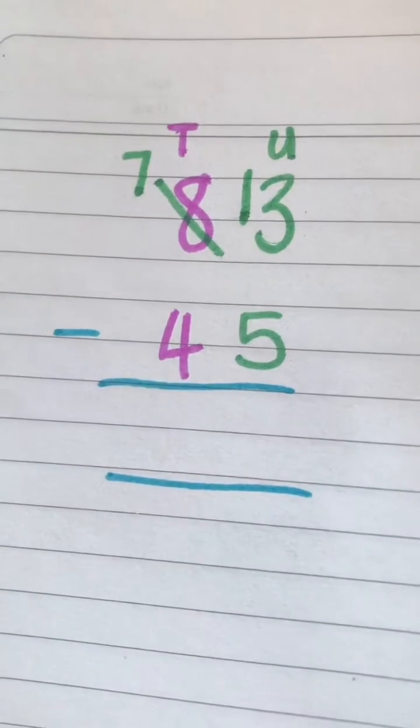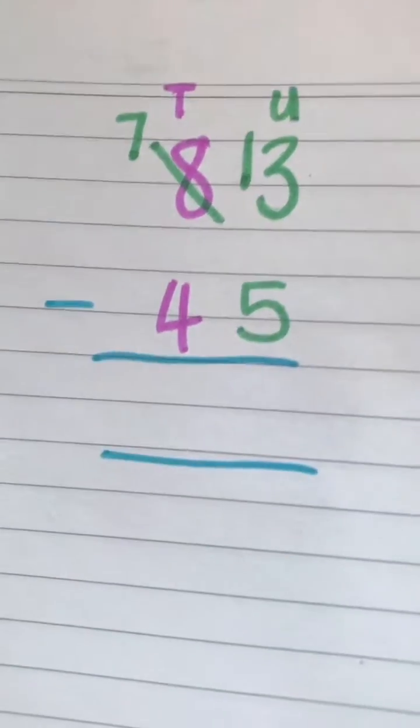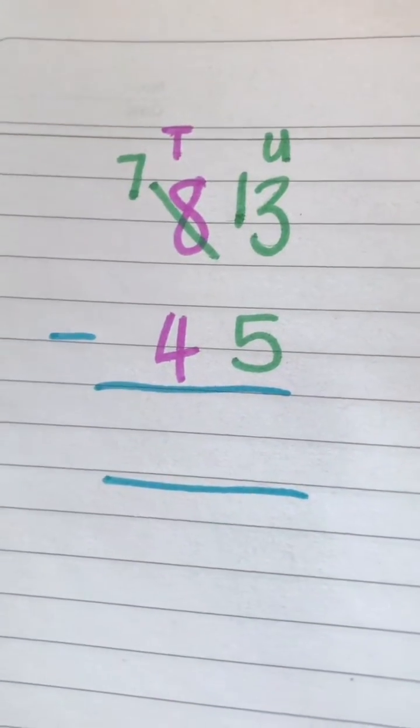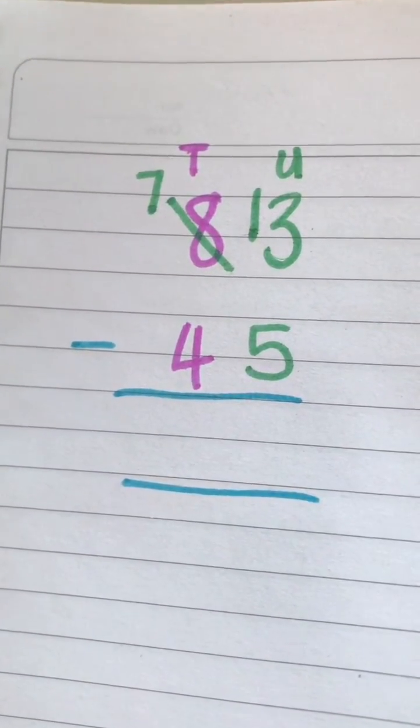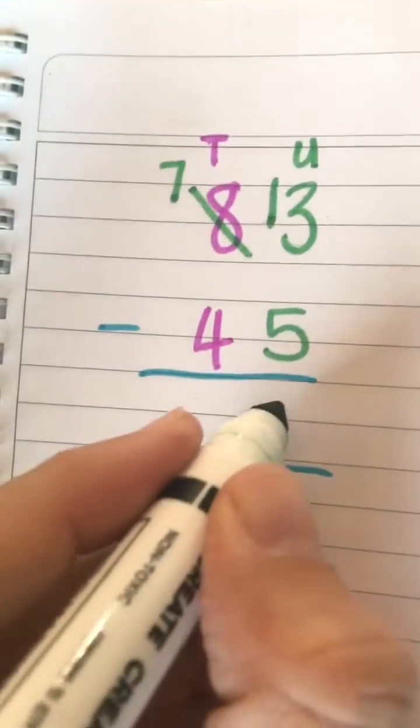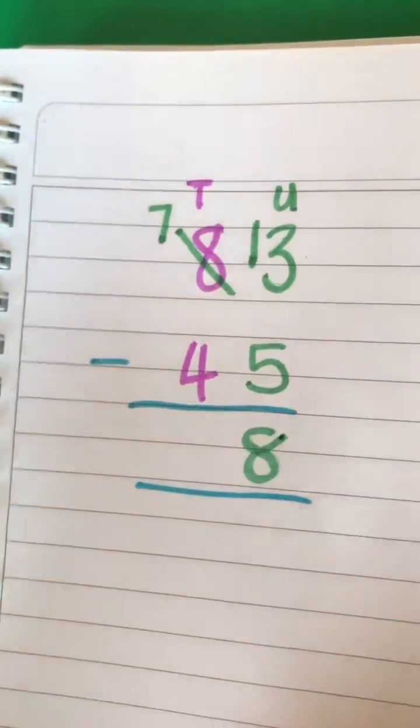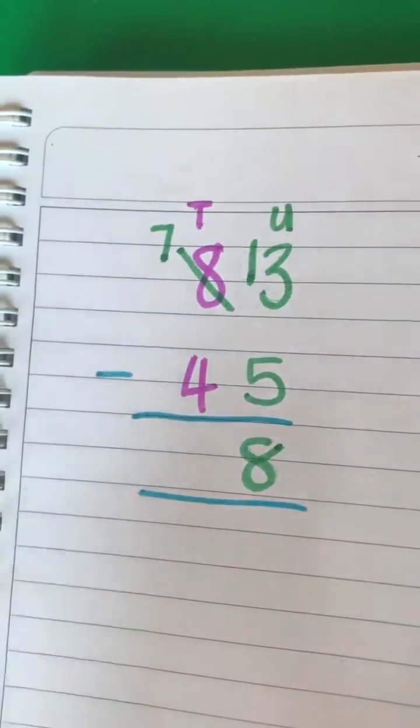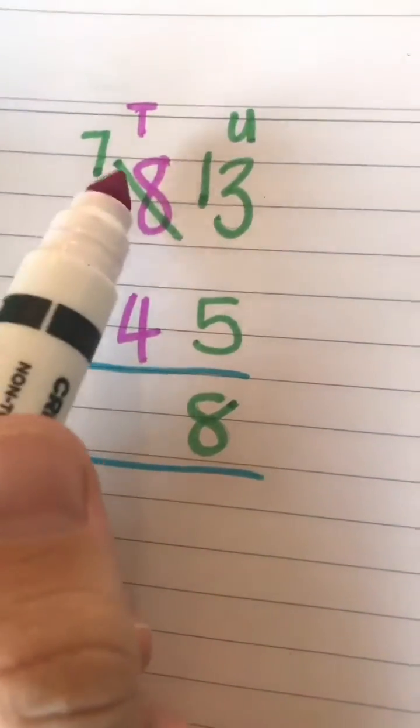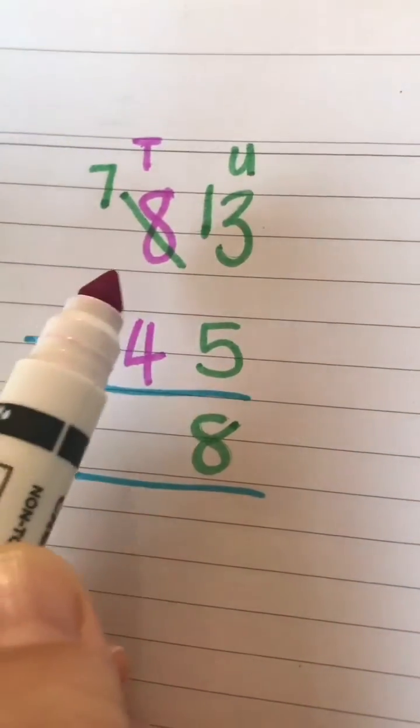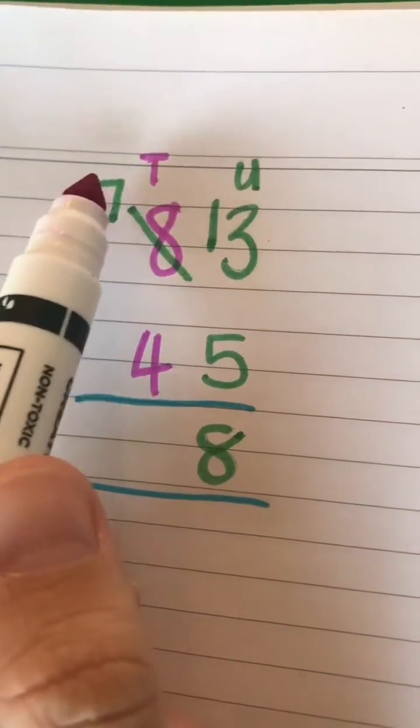me 8. Okay, so 13 minus 5 gives me 8. Now I can go back to my tens column, and now because I've borrowed that 10, it's no longer 8 anymore. That's why I crossed it out—I'm actually working with a 7, okay, which actually stands for 70. So 7 minus 4, easy peasy, is 3. Okay, so 83